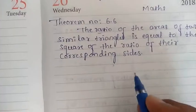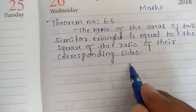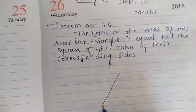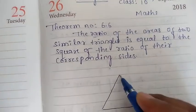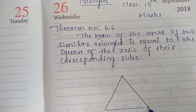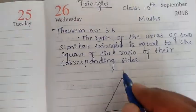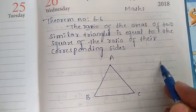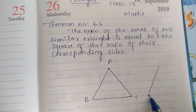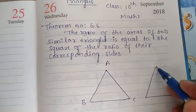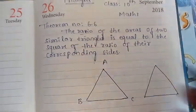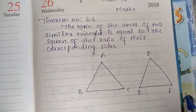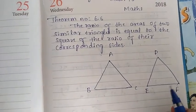So take two triangles — triangle ABC and one more triangle DEF. These corresponding sides are in the same ratio.